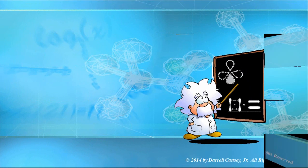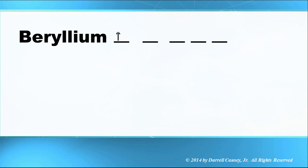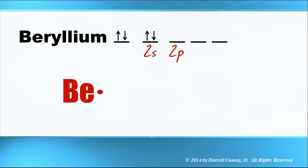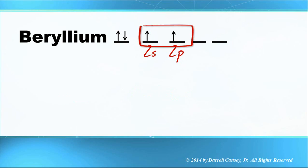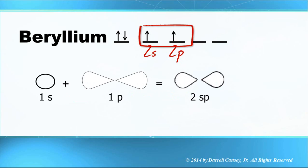Let's look at some examples of hybridization. Beryllium has two outer shell electrons, but we know that it makes two equal bonds. Even though this is our Lewis dot symbol, when it bonds we get two separate equal bonds, so there must be some hybridization. One of the s electrons jumps up into the p, and they combine to give us two brand new sp orbitals — making it a linear molecule.